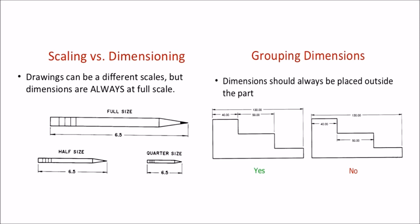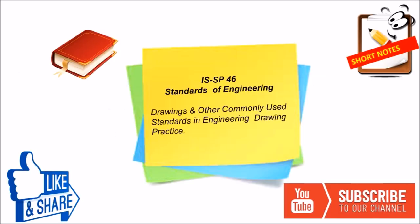Coming up to the scaling and dimension of the object. Scaling is always done at a full size. Either we are drawing the object a full size object, half size object or quarter size object as shown. Dimension should always be placed outside the part of the object.